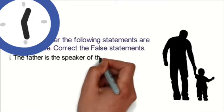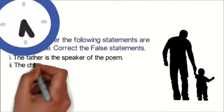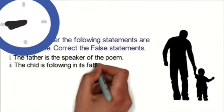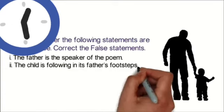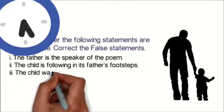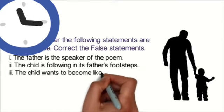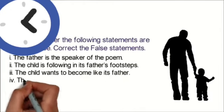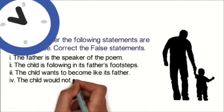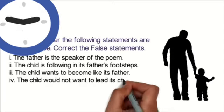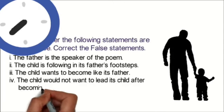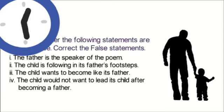The father is the speaker of the poem. The child is following in his father's footsteps. Third question hai. The child wants to become like its father. And the fourth question hai. The child would not want to lead its child after becoming a father.